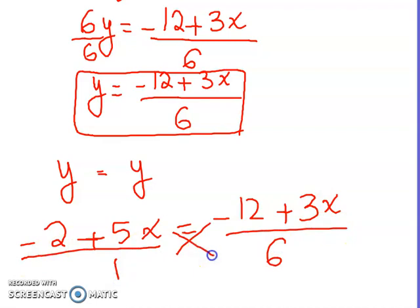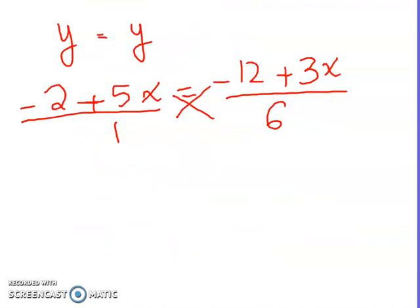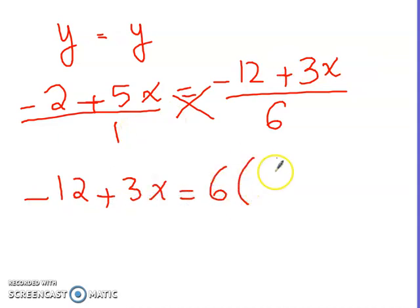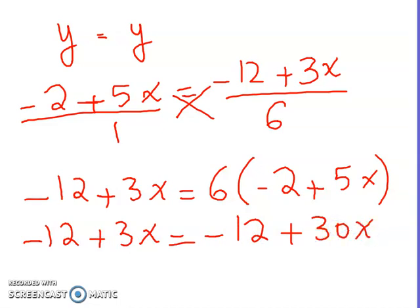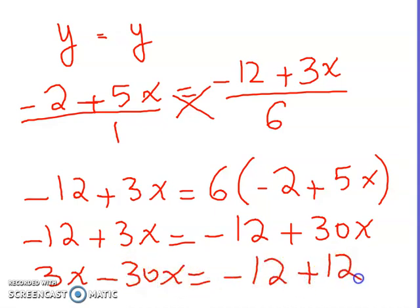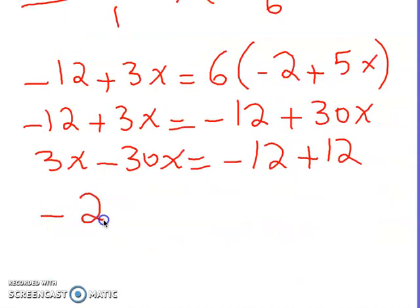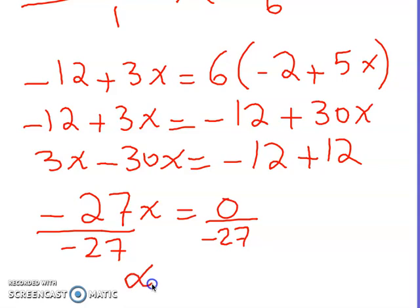We put the left side over one and do cross multiplication. Minus twelve plus three x multiplied by one stays the same, so minus twelve plus three x equal six times minus two plus five x. Expanding: minus twelve plus three x equal minus twelve plus thirty x. Separating variables and constants: three x minus thirty x equal minus twelve plus twelve, giving minus twenty-seven x equal zero, so x equal zero.